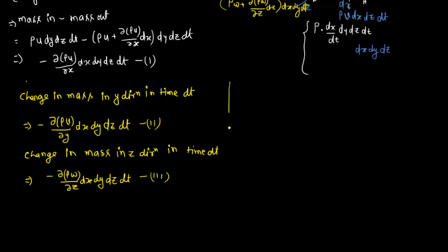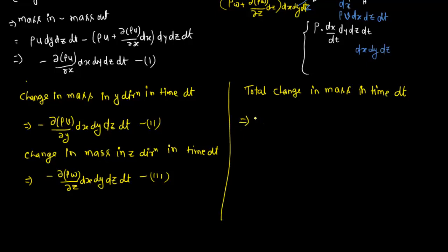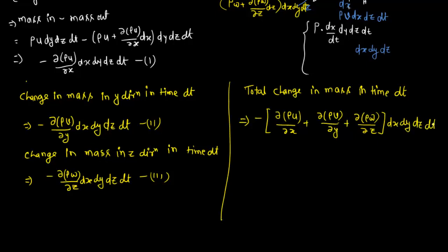The total change in mass in time DT is the sum of all three equations: −[(∂(ρU)/∂x) + (∂(ρV)/∂y) + (∂(ρW)/∂z)]·DX·DY·DZ·DT. This is the total change in mass through the parallelepiped in the time interval DT.